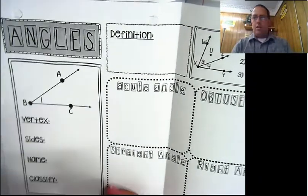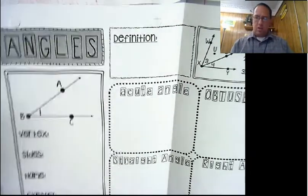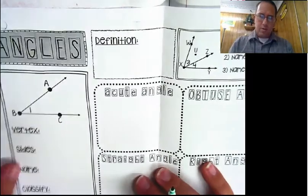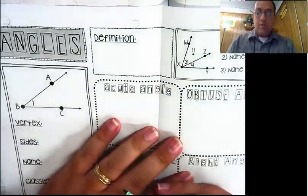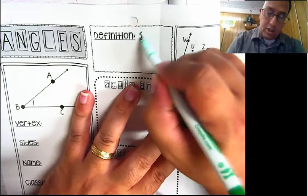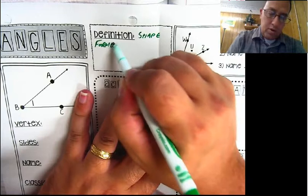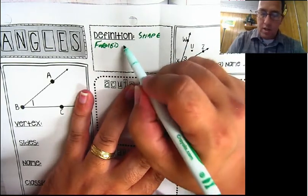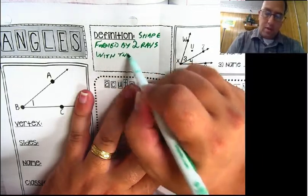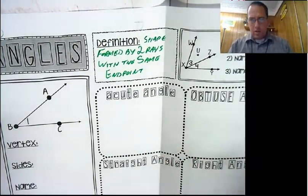Angles - that's right. Everybody's seen angles, but that's okay. We're going to define them anyway, just in case you don't remember what they are. The definition of an angle: this is a shape that is formed by two rays with the same endpoint. Two rays with the same endpoint.